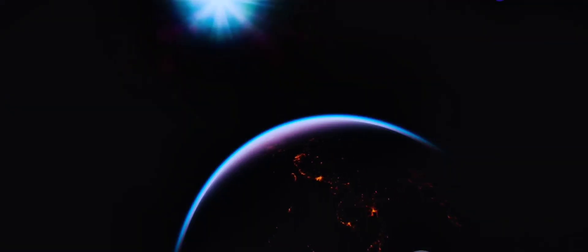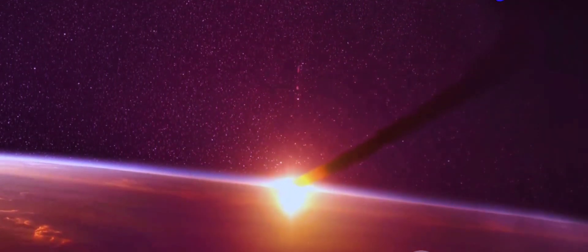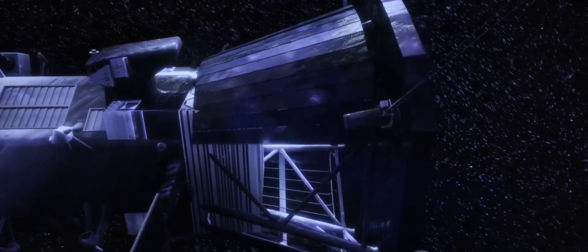This solar wind, traveling at supersonic speeds, inflates a giant bubble around our solar system, much like a protective shield. This shield is not static, it is constantly being shaped and reshaped by the solar wind and the interstellar medium. This bubble is the heliosphere.